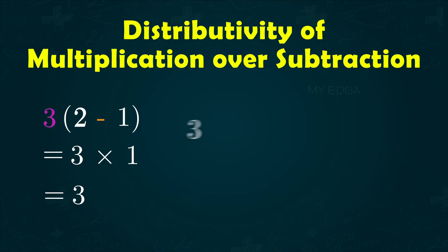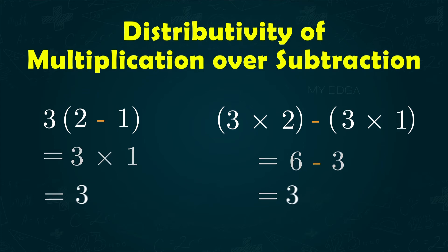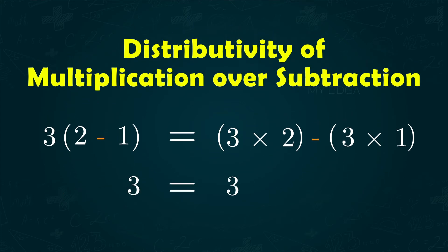Now 3 is distributed to 2 and 1. The difference of their products is 3 again. Here both sides are equal.